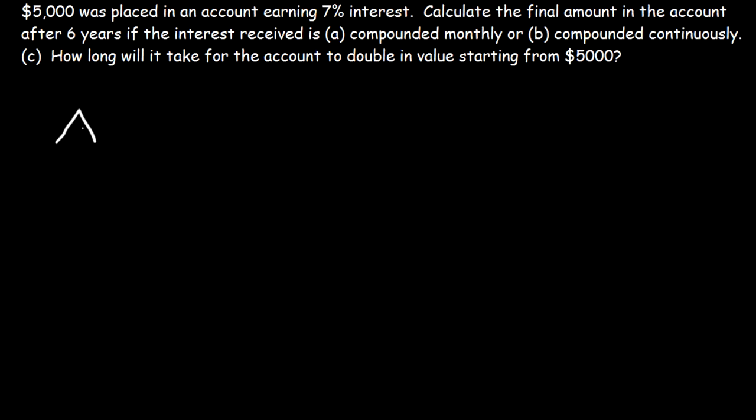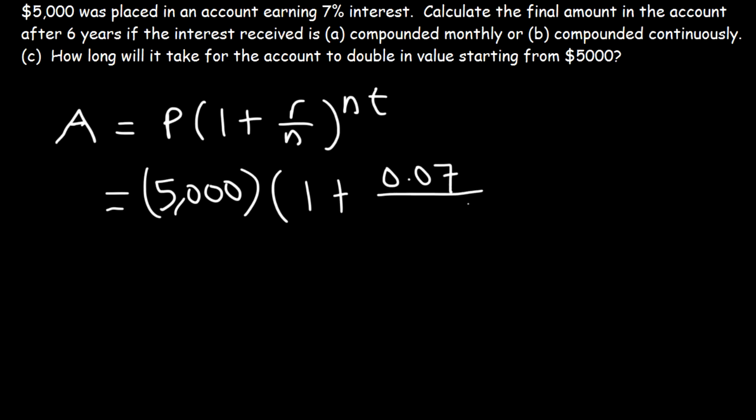So what equation do we need in order to figure this out? Here's the equation. A is equal to P times 1 plus R divided by N raised to the NT. Okay, so what exactly can we do with this? You need to know that A represents the final amount. P is the principal. That's how much you put in the account initially. We placed in $5,000 in the account. The interest rate is 7%, which is .07 as a decimal. To get it, just take 7 and divide it by 100.